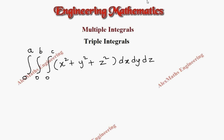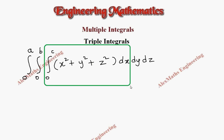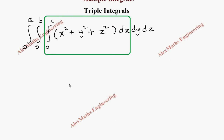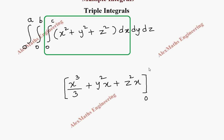First, we are going to integrate with respect to x. It means other than x, the remaining variables are treated as a constant. So x square integration is x cube by 3. y square is constant, so when we integrate with respect to x it becomes y square times x. z square is also a constant, so it becomes z square times x.